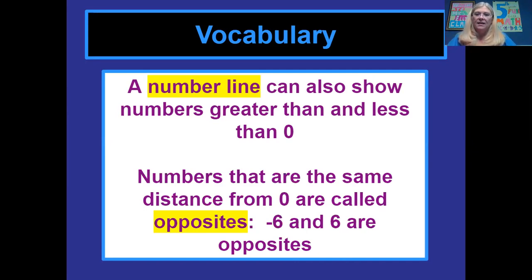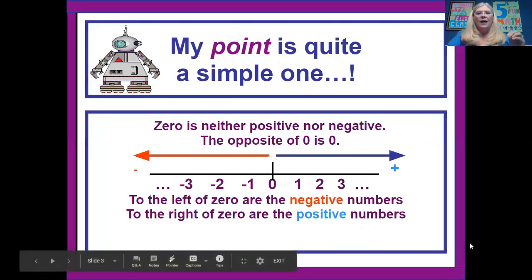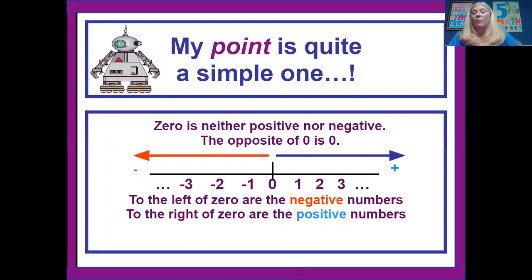Well all these numbers have opposites. A positive six has a negative six as an opposite. So zero is not positive or negative. The opposite of zero is zero, right? And on a number line like you see here all the numbers to the left of the zero are considered negative numbers. They have a little minus sign in front of them. And all of the numbers to the right of a zero are positive numbers.